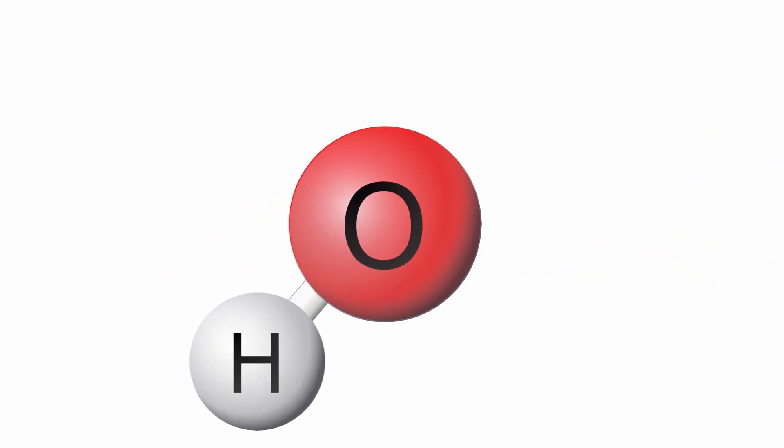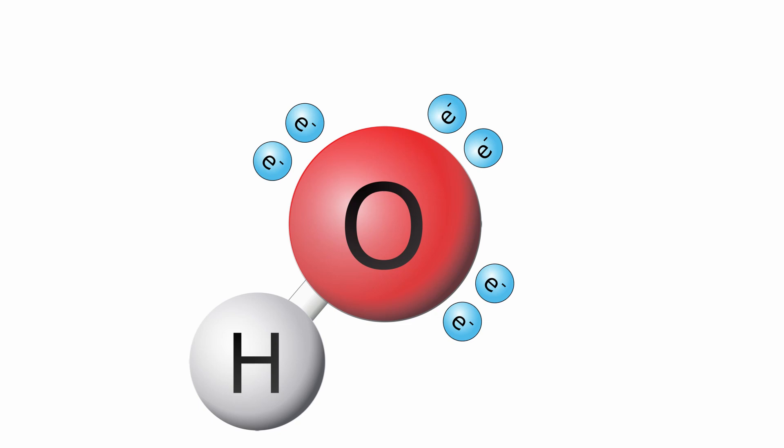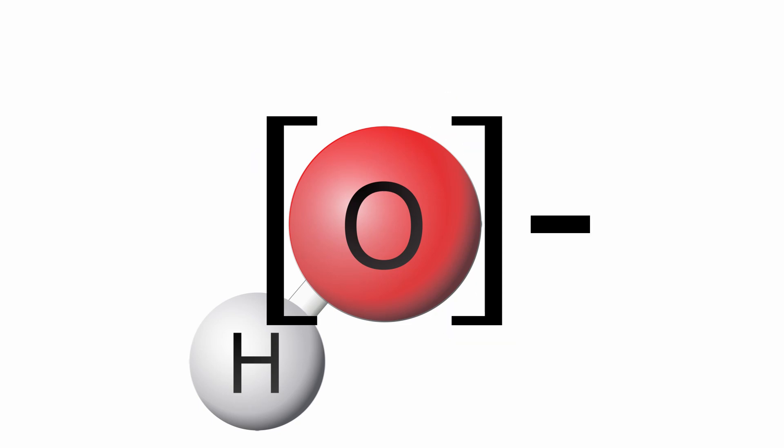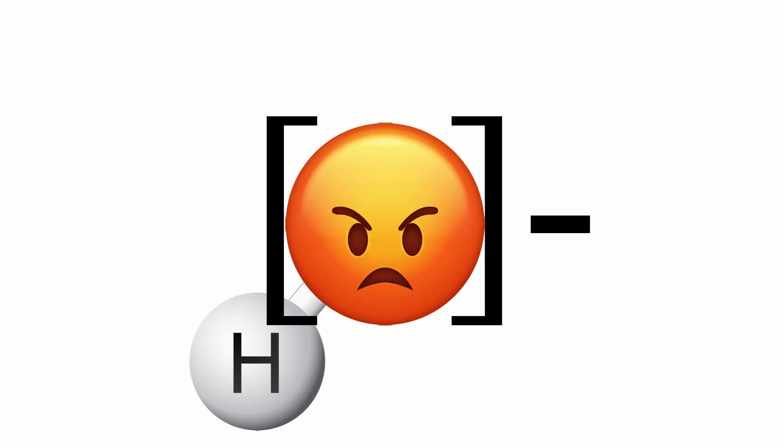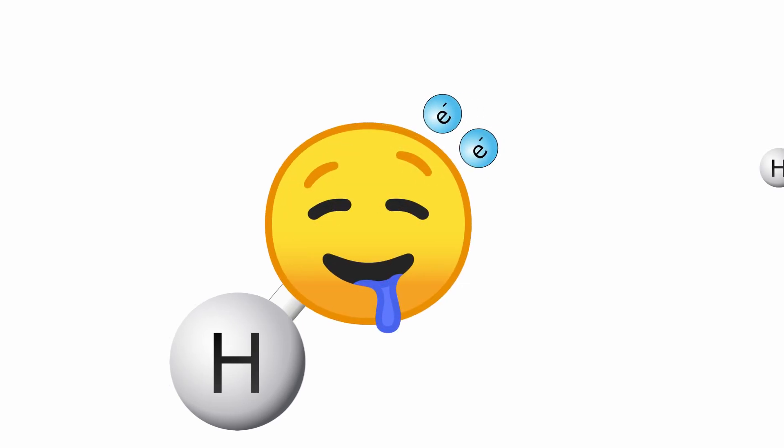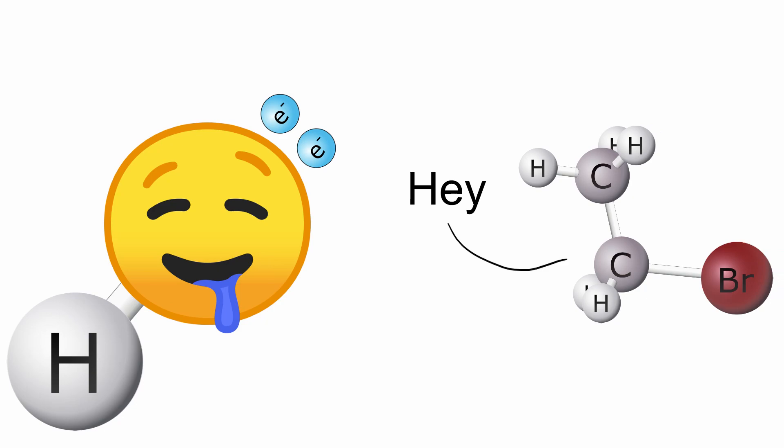You see, he's got an oxygen right here with three big fat lone pairs on it, and all those extra electrons give this oxygen an overall negative charge. Oxygen is not happy with this charge and would love to stick its lone pair way up into the orbital of some other atom, you know, to make a bond.